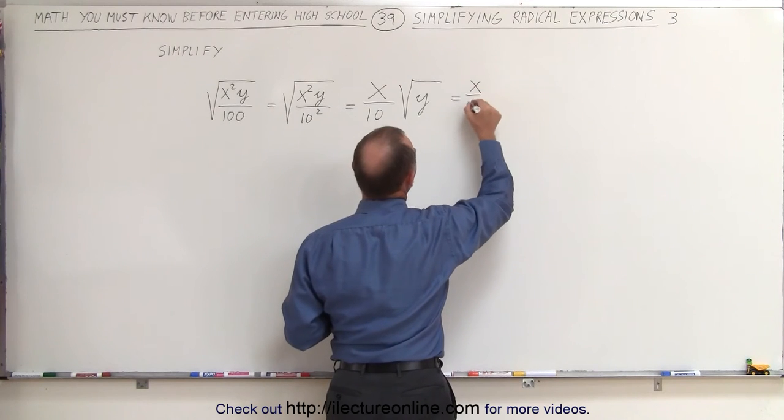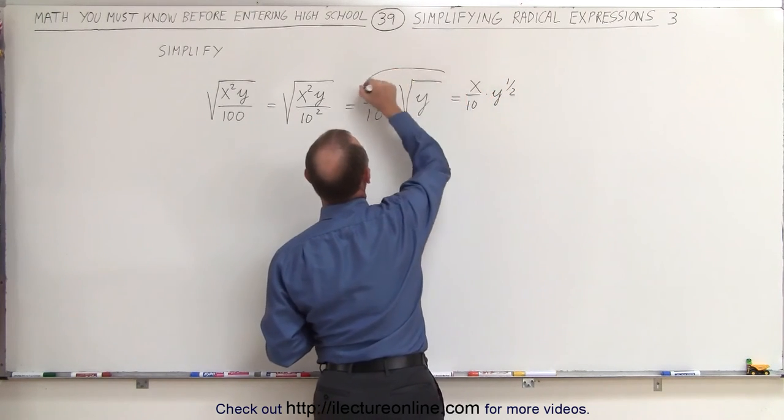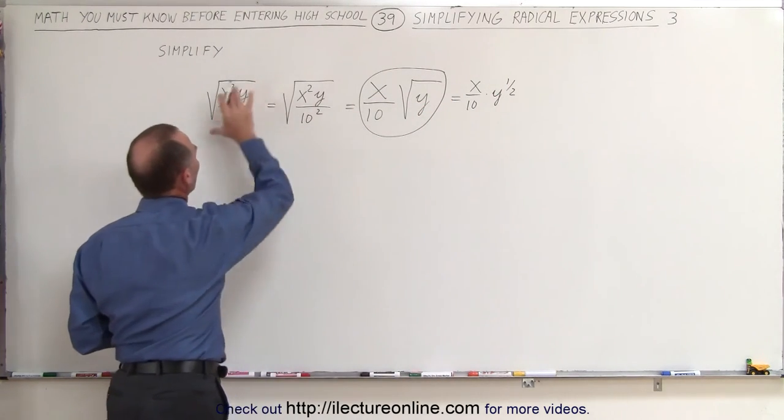this can be written as x divided by 10 times y to the one-half power. However, if you can leave the radical sign in, that would be a simplified form of our original problem.